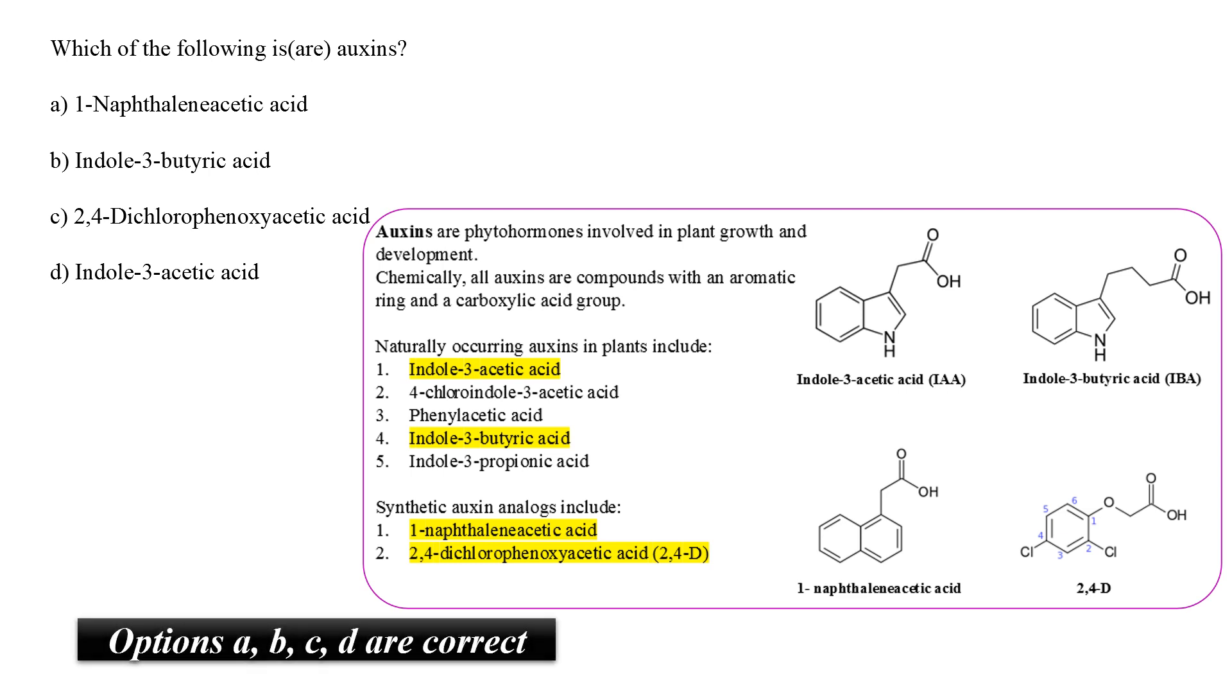While the option B and option D, i.e. the indole-3-butyric acid and indole-3-acetic acid are examples of naturally occurring auxins along with some others such as phenylacetic acid and indole-3-propionic acid. Here, option A, B, C and D, i.e. all of the options given are correct.